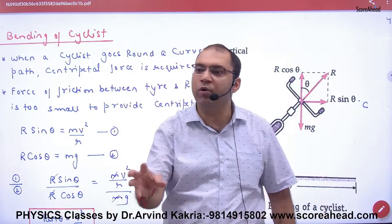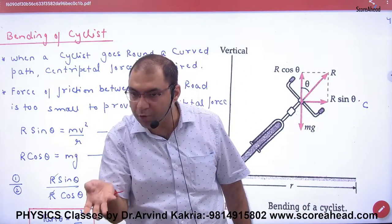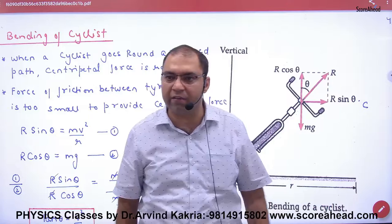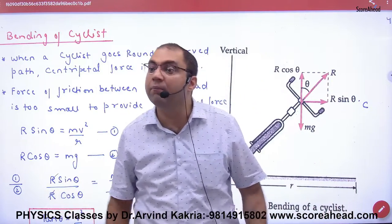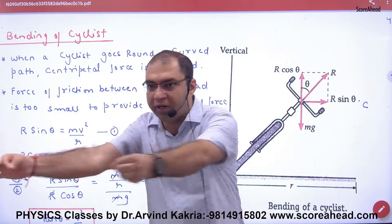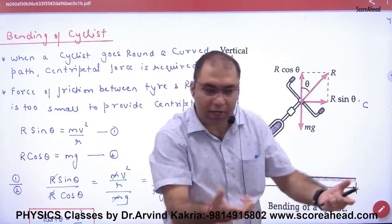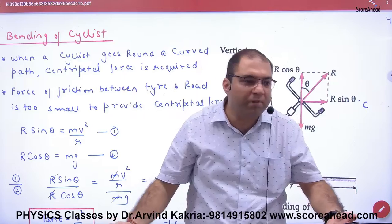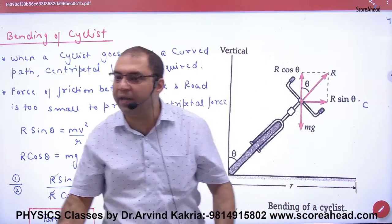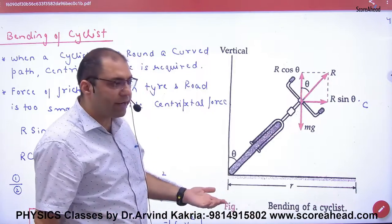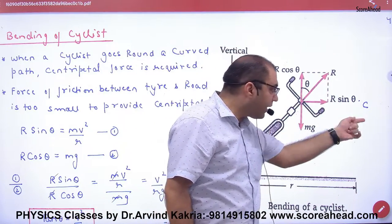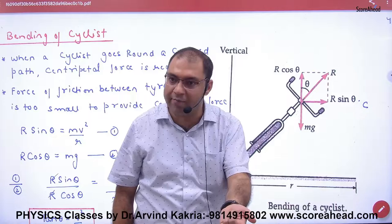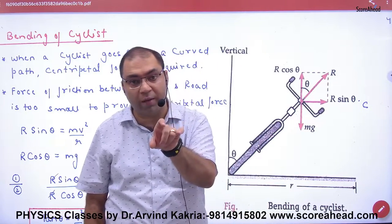Second: if the cycle wants to move in a circle, what should provide the centripetal force, and in which direction should it act? It must act towards the center. Without bending, there is no centripetal force — so you must bend. When the cyclist bends, the R sin θ component automatically points towards the center, and this R sin θ force acts as the centripetal force.